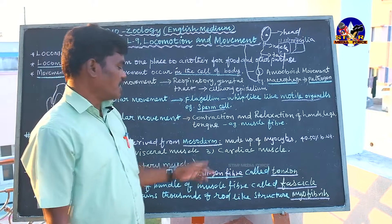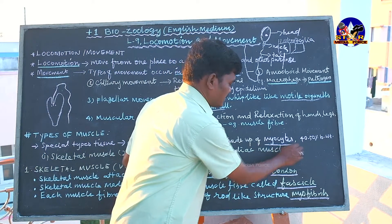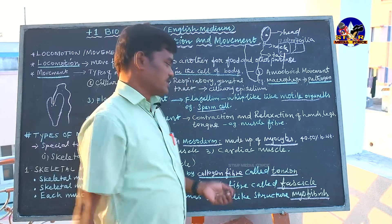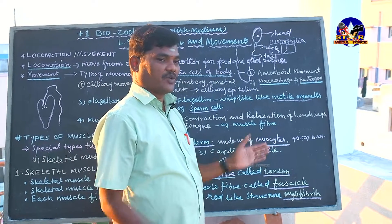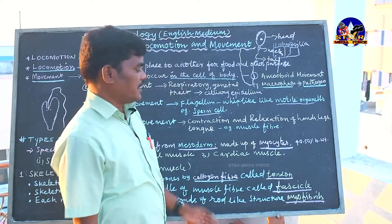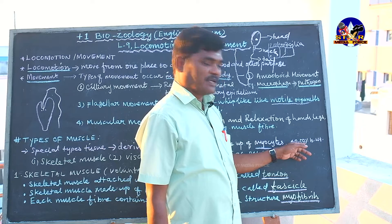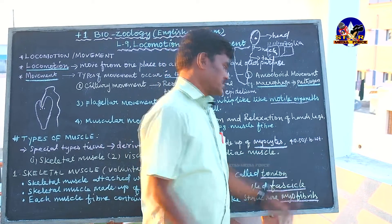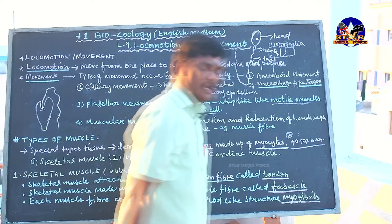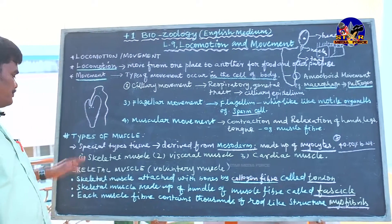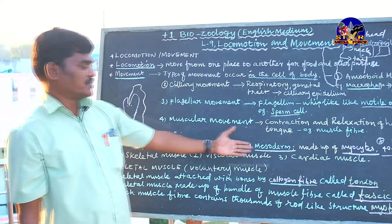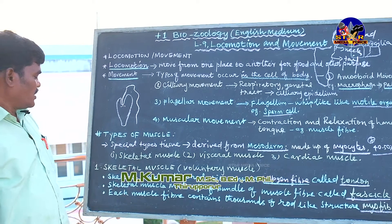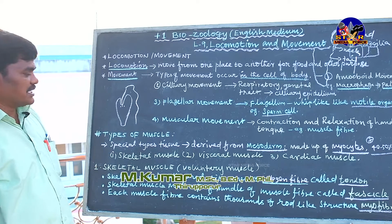All muscles are made up of myocytes, which are muscle cells. These myocytes stack one upon another to form muscle fibers. In our body, approximately 40 to 50 percent of the body weight is made up of muscle. The origin of muscle is from mesoderm, and the muscle cell is called a myocyte.